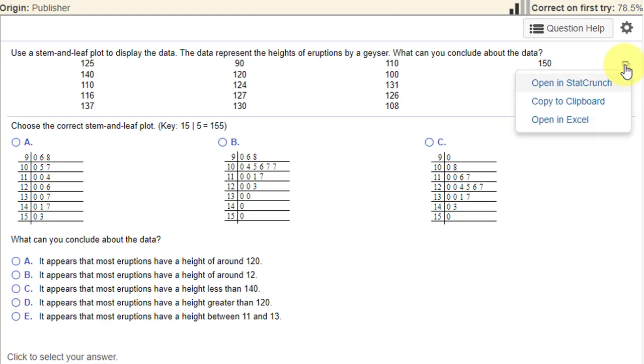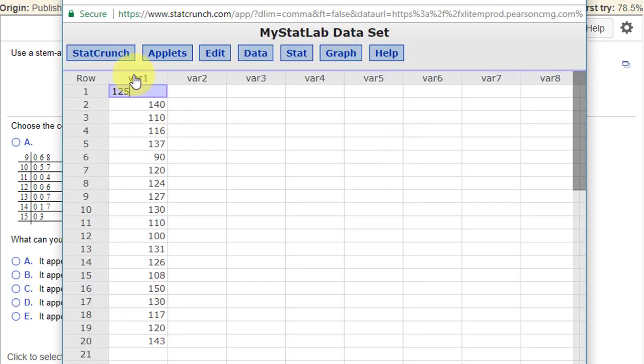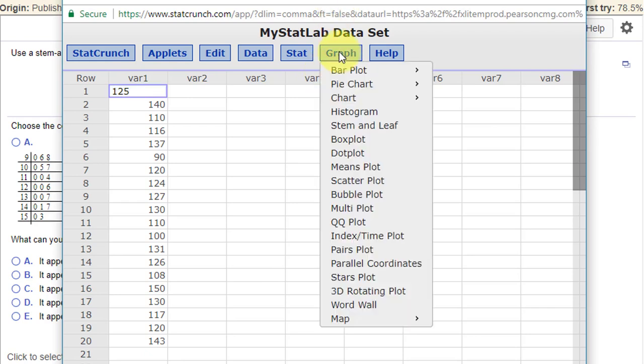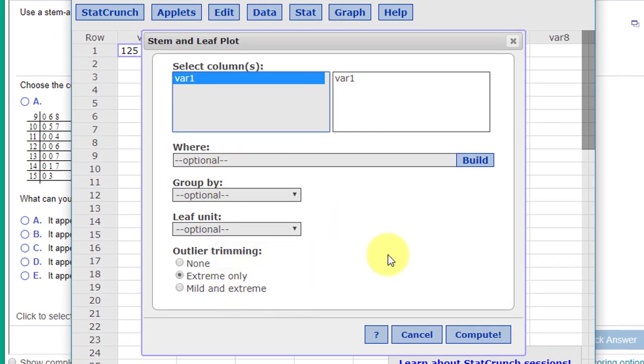little rectangle there to open StatCrunch. We have our data there, and it's pretty straightforward. We just go to Graph, look for stem-and-leaf, select our variable, and we can leave everything else alone.